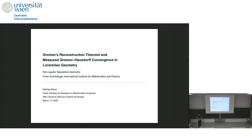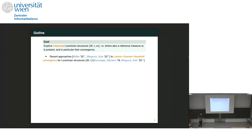Thank you very much for the kind introduction, and thanks to the organizers for having me here. I'm really proud and happy to be part of this conference and more generally to be part of this very vivid and nice community. What I'm going to talk about today is joint work with Clemens Seemann from Oxford University. It's a complementary approach to measured Gromov-Hausdorff convergence, as you have already heard from Olaf Müller today and will also hear from Stefan Suhr later in the week. I will be concerned with Lorentzian structures which are additionally equipped with a reference measure.